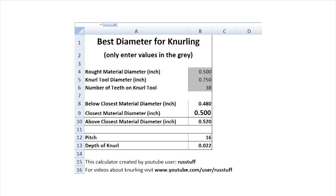You can go ahead and download my free Excel spreadsheet calculator. This is available at randomroughstuff.com. All you need to do is fill out these three gray values: the rough material diameter, the knurl tool diameter, and the number of teeth on your knurling tool. It'll give you the closest material diameter, the next lowest and the next highest, as well as the pitch and the depth at which you can knurl.